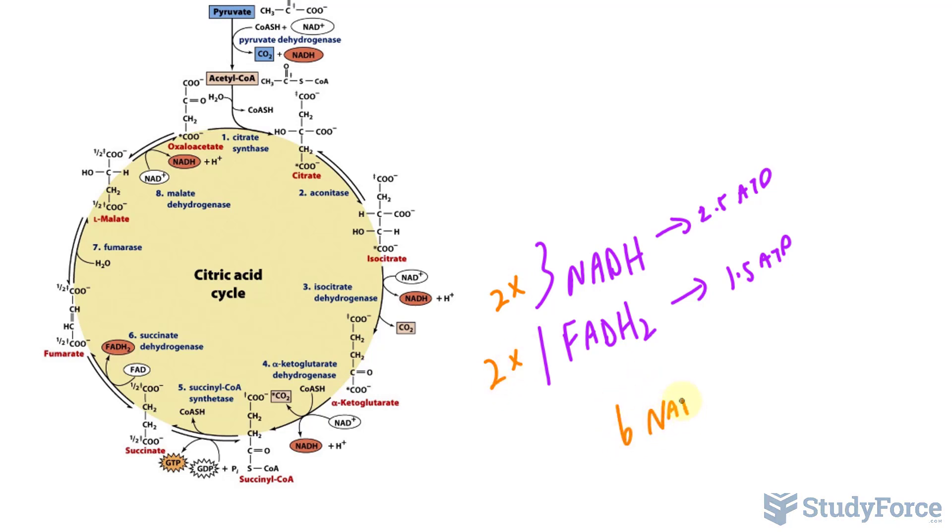I'll multiply this by 2 because we have two spins, so 6 NADH and 2 FADH2. If we multiply this by 2.5, we end up with 15, and if we multiply this by 1.5, we get 3. Adding this up, that's 18 ATP.